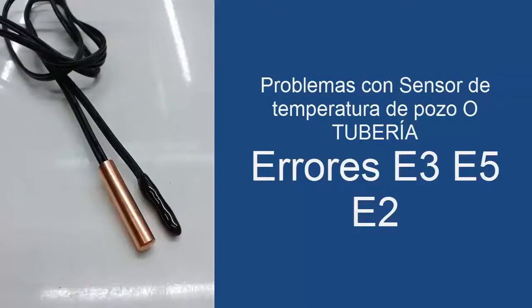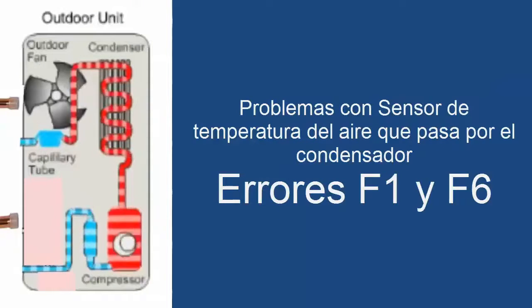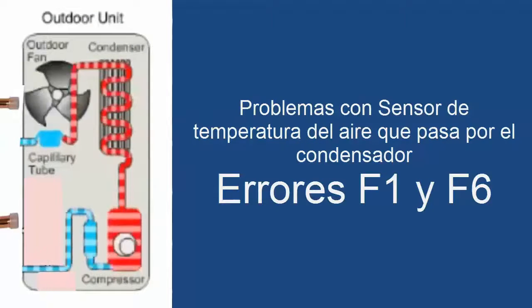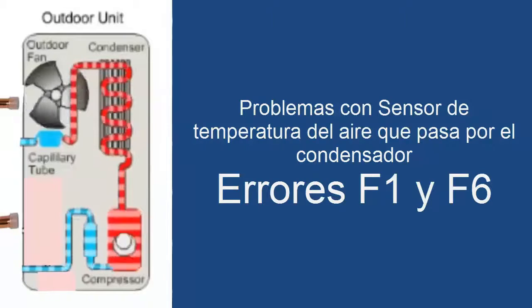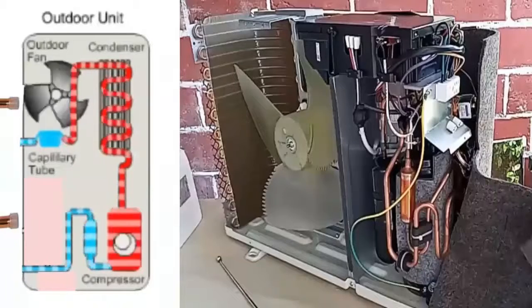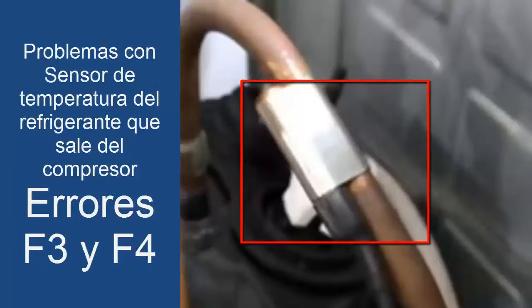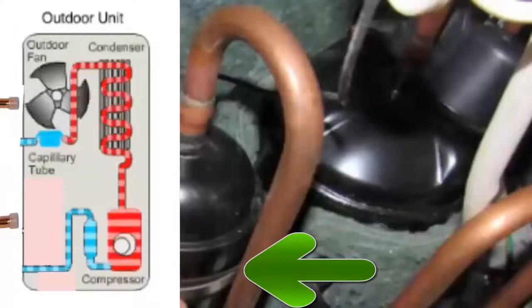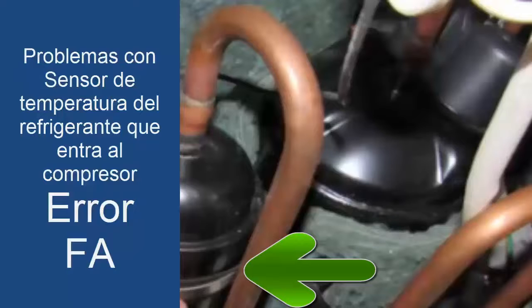3. Fault codes associated with the Condenser Temperature Sensor are F1 and F6. 4. Fault codes associated with the Compressor Discharge Sensor are F3 and F4. 5. Fault codes associated with the Refrigerant Temperature Sensor at the Compressor Suction is F8.